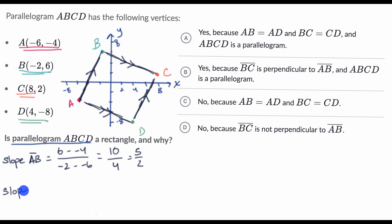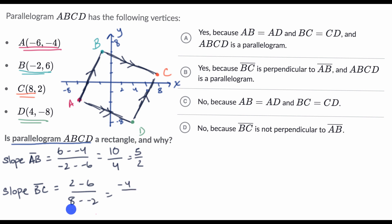What is the slope of segment BC? The slope of BC equals change in Y over change in X: two minus six, over eight minus negative two. That's negative four over ten, which equals negative two fifths. In algebra, you may have learned that slopes of lines that intersect at right angles are opposite reciprocals of each other. You can see that here: the reciprocal of five halves is two fifths, and the opposite of that is negative two fifths.